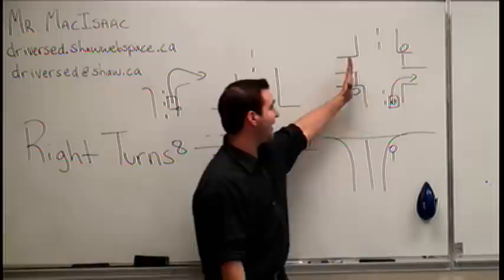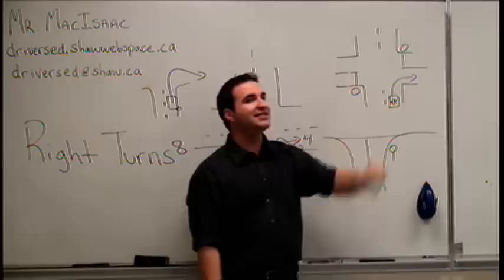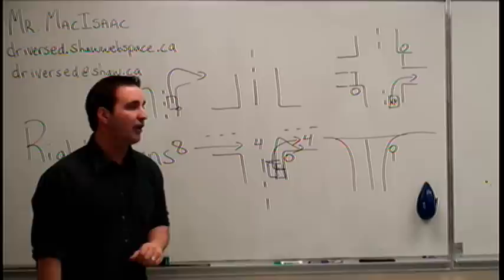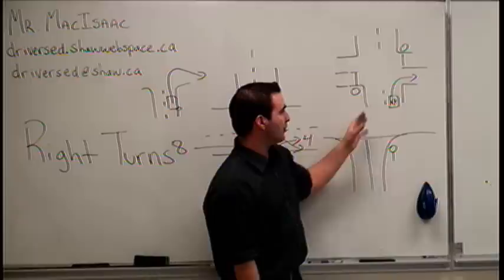And this oncoming left turner with a green light should yield to you. Right turner has the right of way over all oncoming cars and all other cars when they have a green light or no stop sign. Of course, at any time you have to yield to an emergency vehicle if one was present.